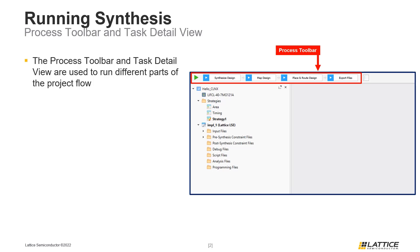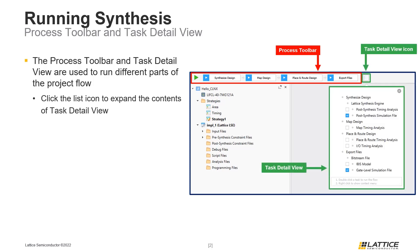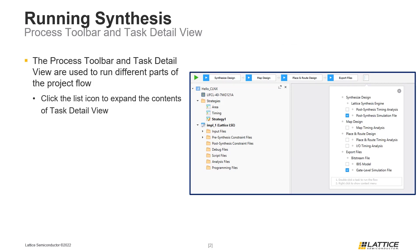To expand the task detail view, click its icon located next to the process toolbar. Similar to the process toolbar, Radiant's task detail view is divided into four sections, each corresponding to a different part of the Radiant project flow.